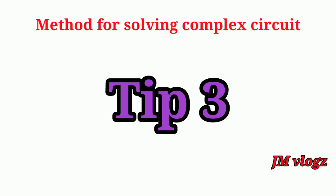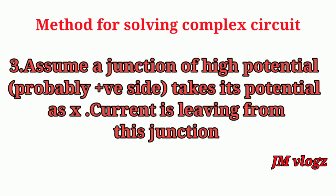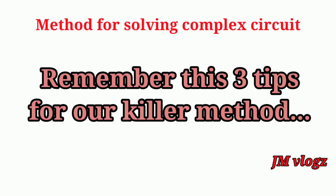Tip number three: we just assume there is a junction having higher potential. Most probably this higher potential is taken as the positive side of the battery. We take the potential of the junction as X. Then we assume this junction of the higher potential and always the current is leaving from this junction. Before starting our approach, we should remember these three tips.